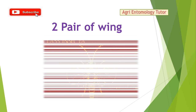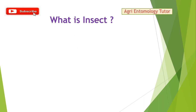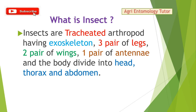Insects also have two pairs of wings, visible on the thoracic part. An insect is defined as a tracheated arthropod having an exoskeleton, three pairs of legs, two pairs of wings, one pair of antennae, and a body divided into head, thorax, and abdomen.